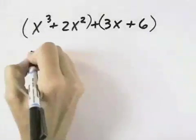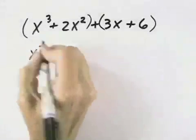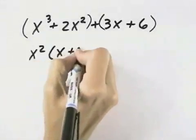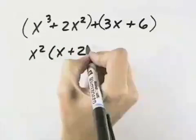In the first two, I have a greatest common factor of x squared. If I divide that out, I'm left with x plus 2 when I divide each of these terms by x squared.